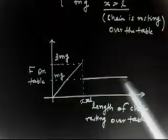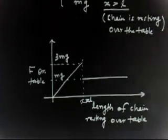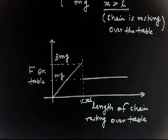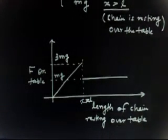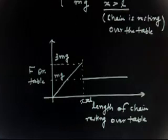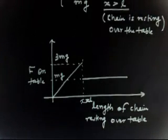So initially the force on the table will vary linearly and increase. When all of length L has fallen (X equals L), the graph shows a straight line rising to 3Mg, then dropping to Mg.